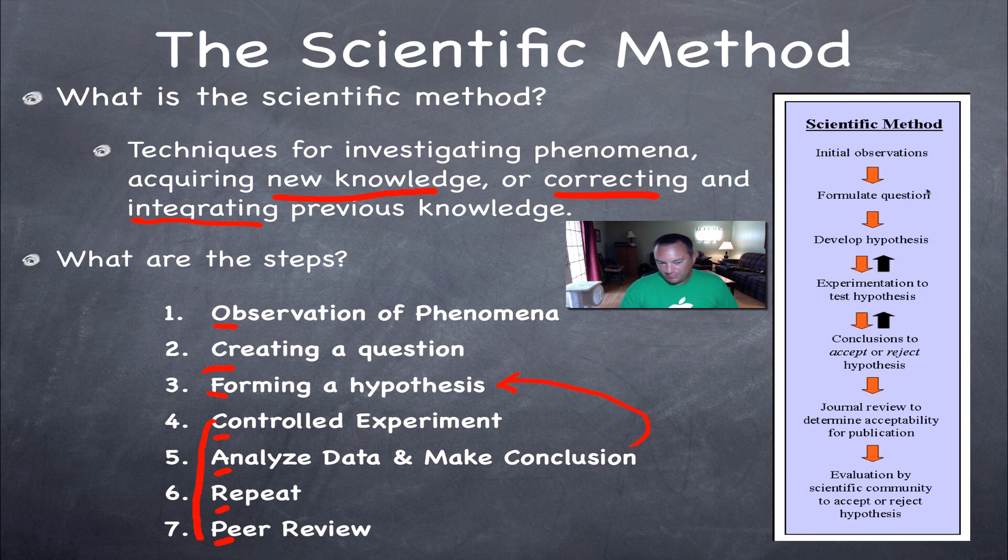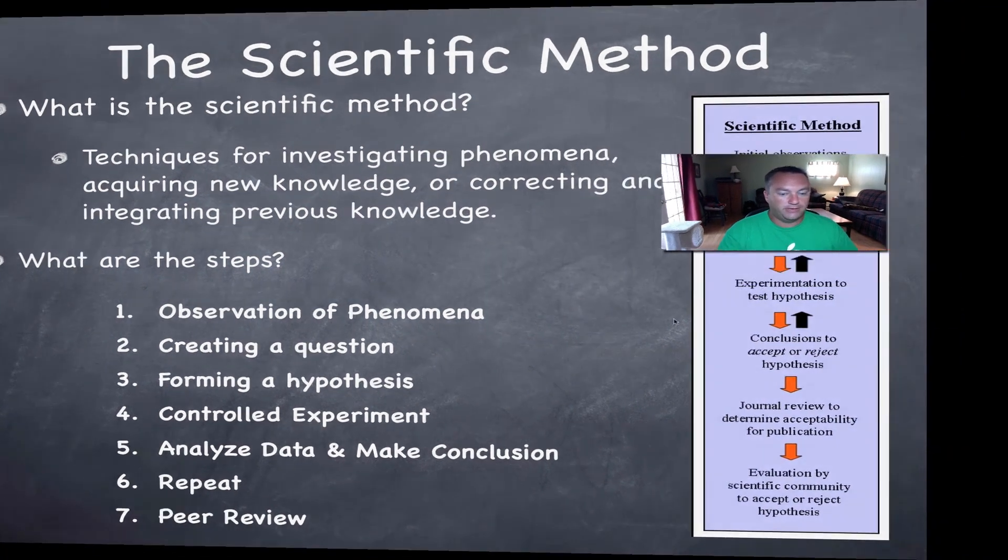Now over here, we got a graphic that pretty much puts a little bit different spin on this. You have your initial observation, which is the phenomenon that you've seen. You formulate a question. That's a hypothesis. You do an experiment to test your hypothesis. You make a conclusion based upon your data. You either accept the hypothesis or you reject it. And you're going to publish in a journal.